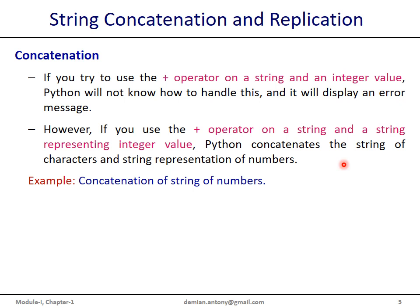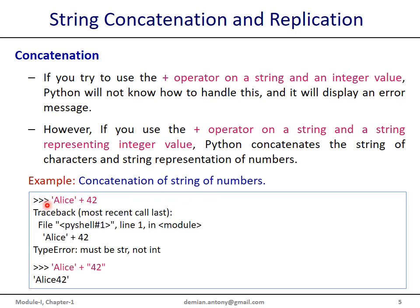Let us take up the example. In this first example, we have the first operand 'Alice', which is a string, and the second operand is a whole number — an integer. This is invalid; we cannot concatenate a string with an integer or floating point value. But it becomes a valid statement if we enclose the whole number 42 with single or double quotes. In this second example, the second operand is represented as a string, and this valid expression evaluates down to a new string 'Alice42'.